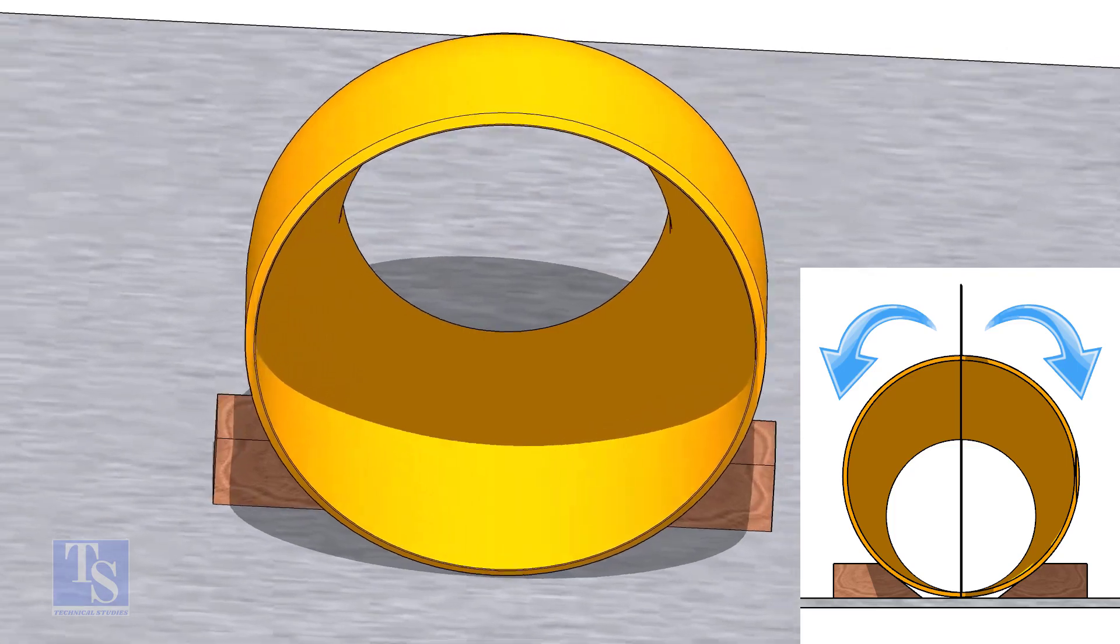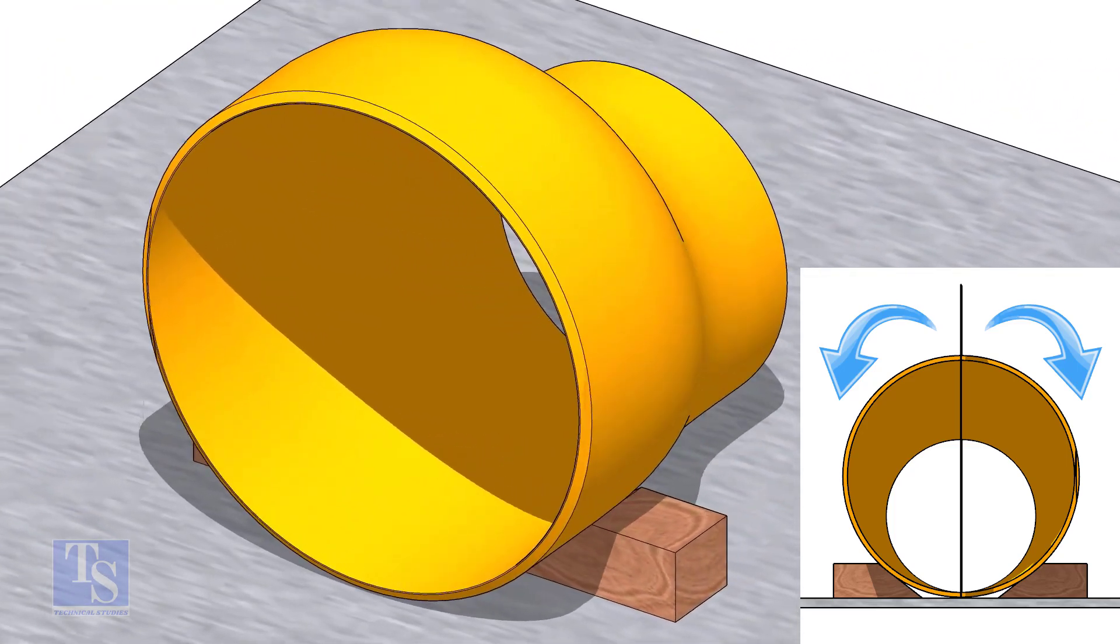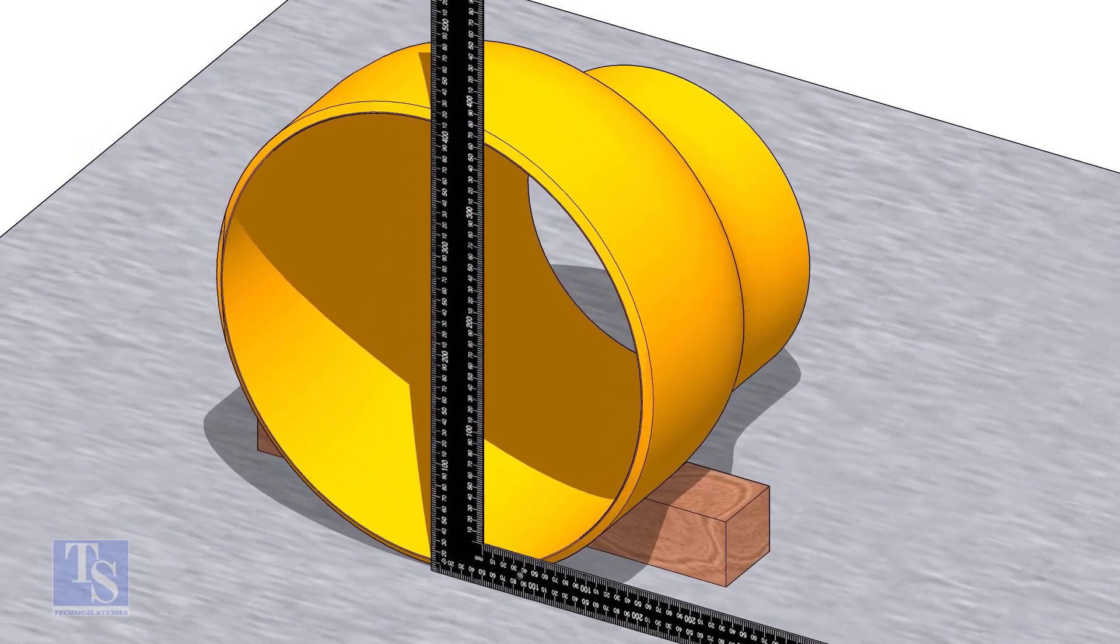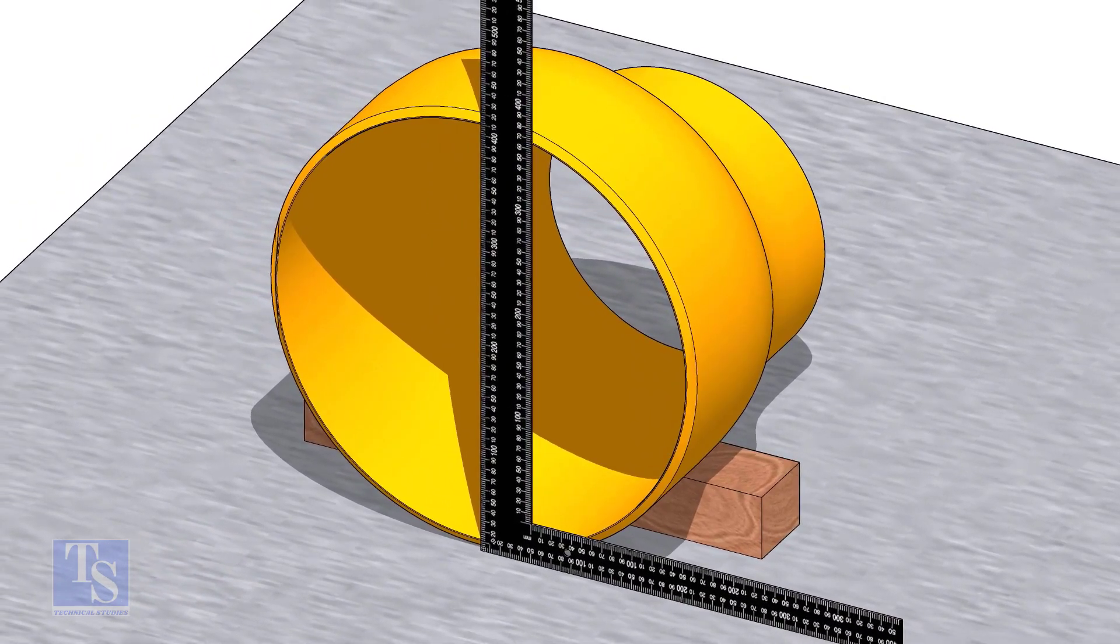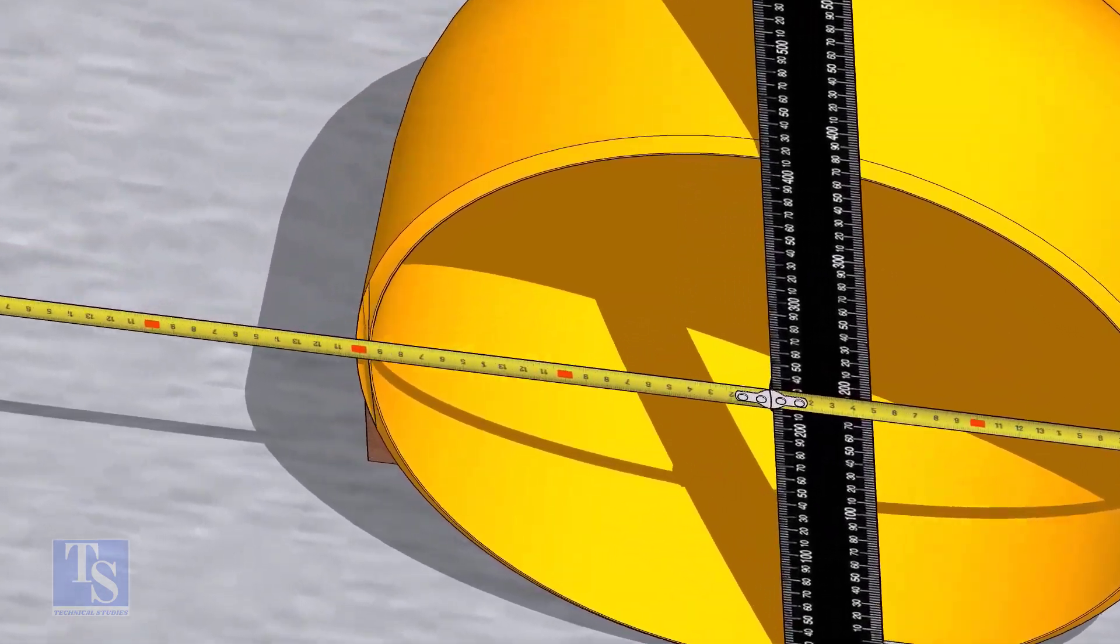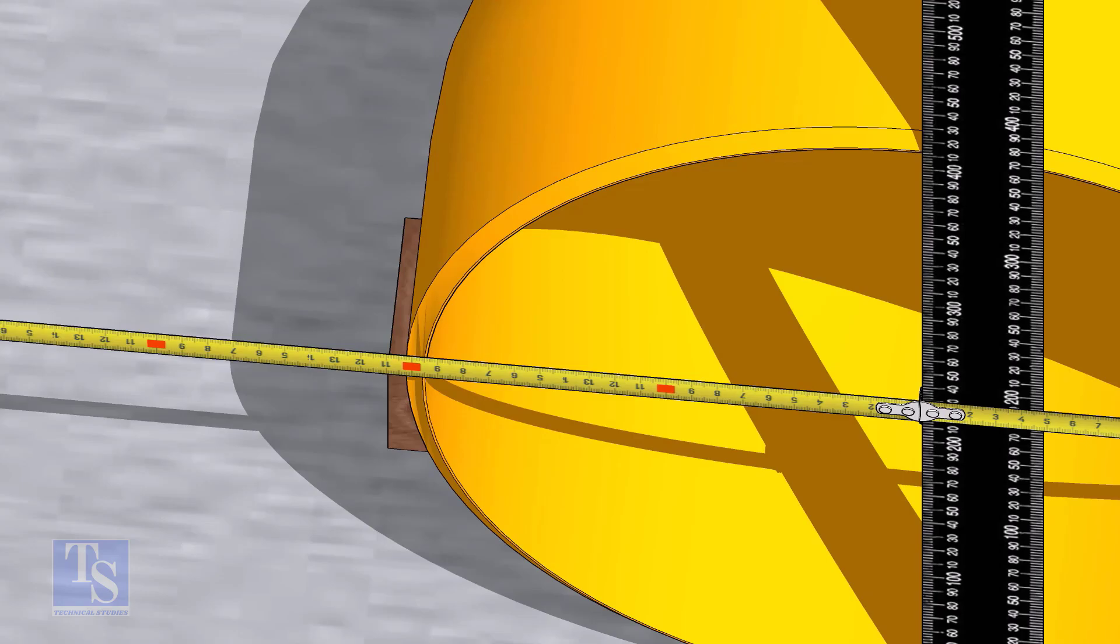Now, lock the reducer from both sides to restrict it from rotation. Put a right angle on the face of the reducer as shown. Measure the distance from the right angle to the outer face of the reducer. Make it equal by moving the right angle.